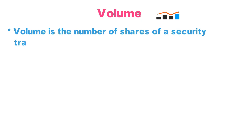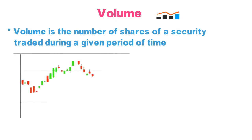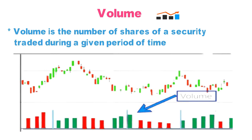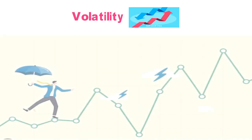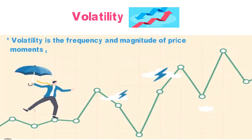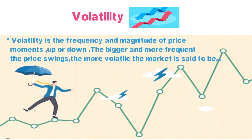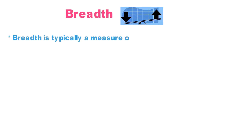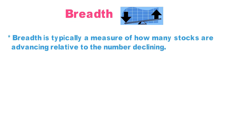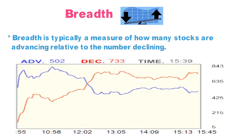Volume indicators show the number of shares being bought and sold over a time when price changes. Volatility indicators say whether the fluctuation of the market is increasing or decreasing in price. Breadth indicators show the number of stocks in positive versus negative — on the NSE India website we get this data as advance and decline.